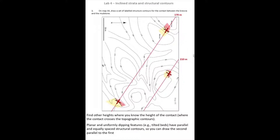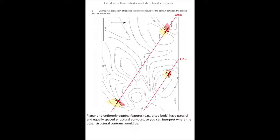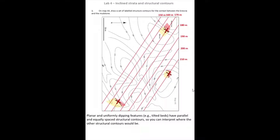Now we have two structural contours, but we'd also like the 180, 190, 200, and so on. Since structural contours for planar features are equally spaced, we can figure out the distance between these contours and plot in the missing ones at appropriate intervals. The spacing between each structural contour is equal — that's the pattern we get for a planar, uniformly dipping feature. I'll draw the heights between 150 and 210, since those are the heights encountered in the topography.